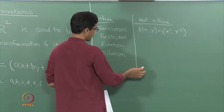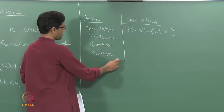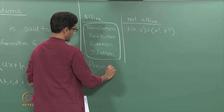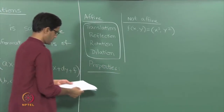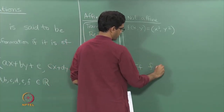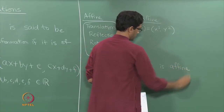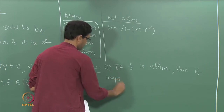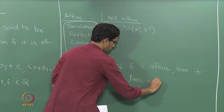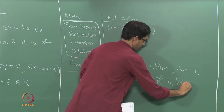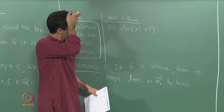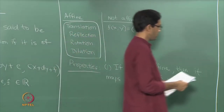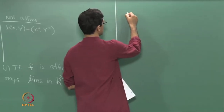What are the various properties of an affine transformation? We have really made a definition which generalizes the examples we looked at. Here are some key properties of affine transformations. The first property: if f is affine, then it maps lines to lines. This was one of the key things we studied in all examples — lines in R2 map back to lines. Let us actually do this computation in general and prove that it maps lines to lines.